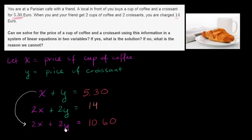Now something very interesting is going on here. If the local had bought just twice as many cups of coffee and twice as many croissants, he would have paid 10.60. And that would have been the exact amount of coffee and croissants you got, and you paid 14. So it looks pretty clear that you got charged a different amount. You got the tourist rate for the cup of coffee and the croissant, while he got the local rate.